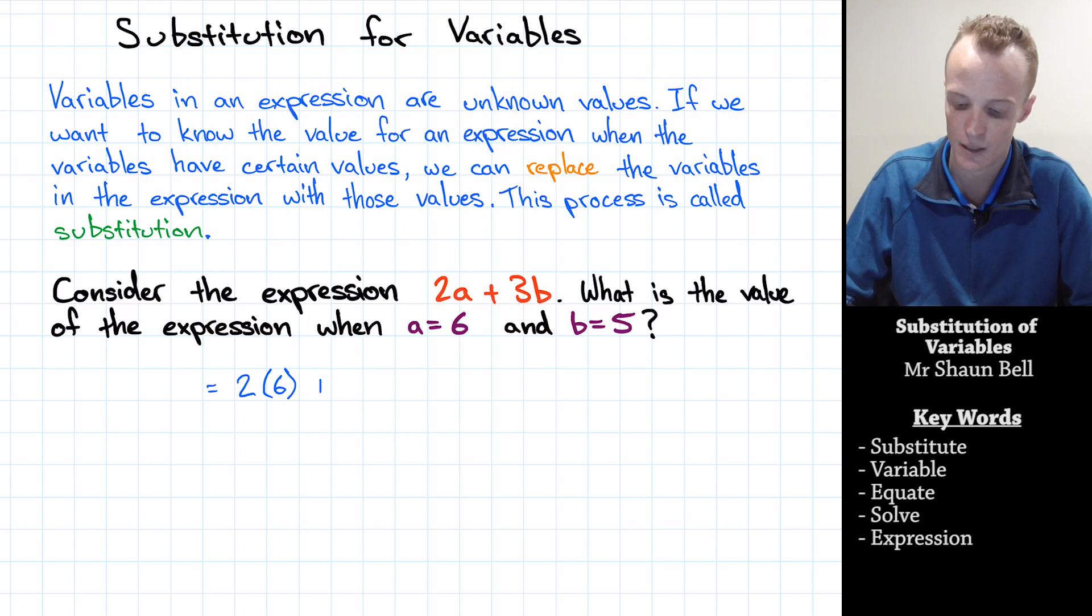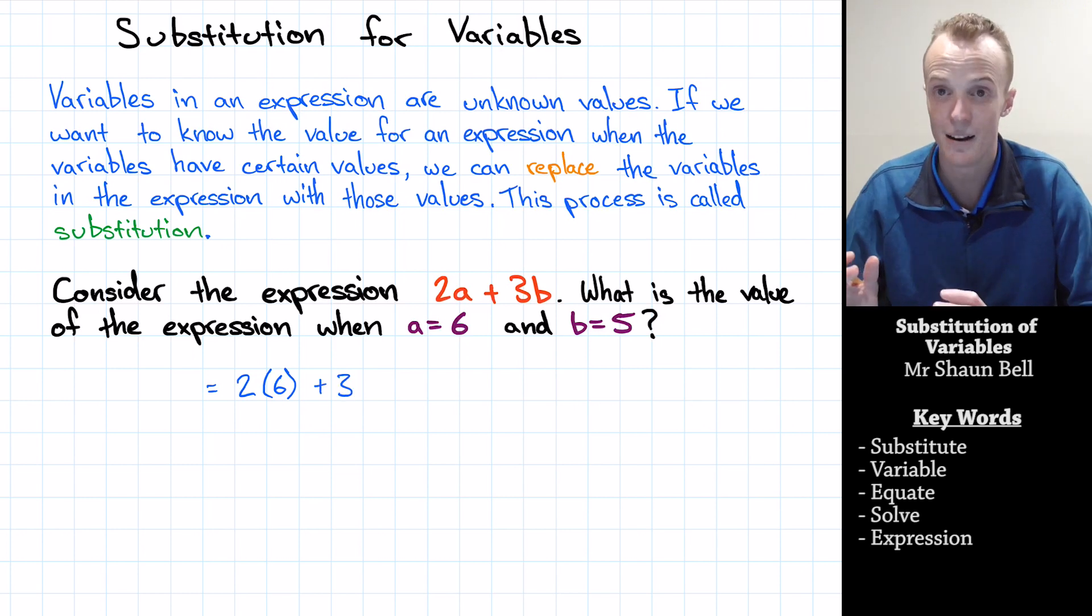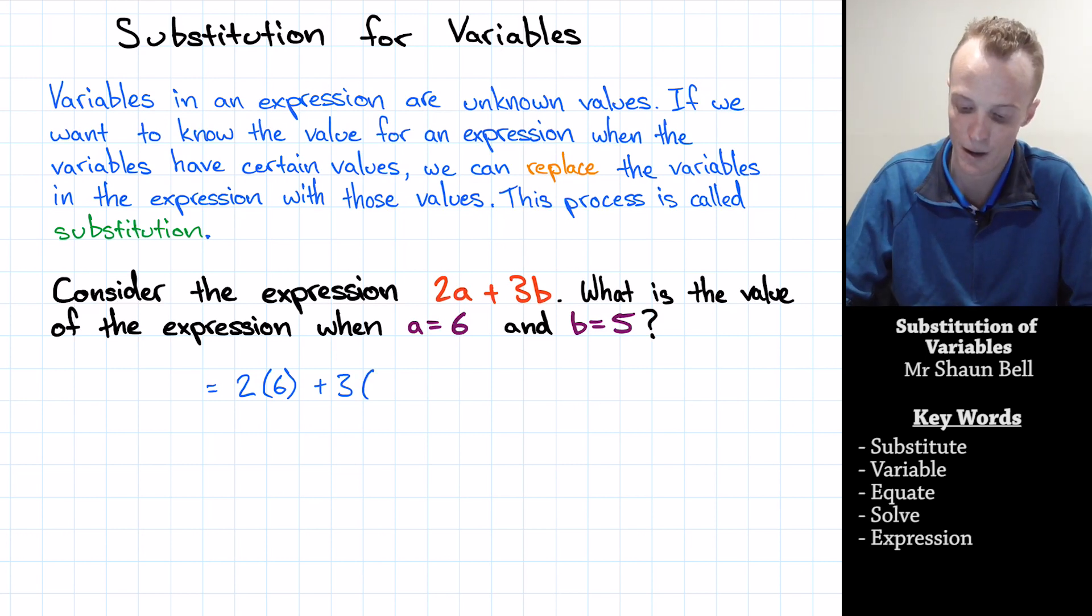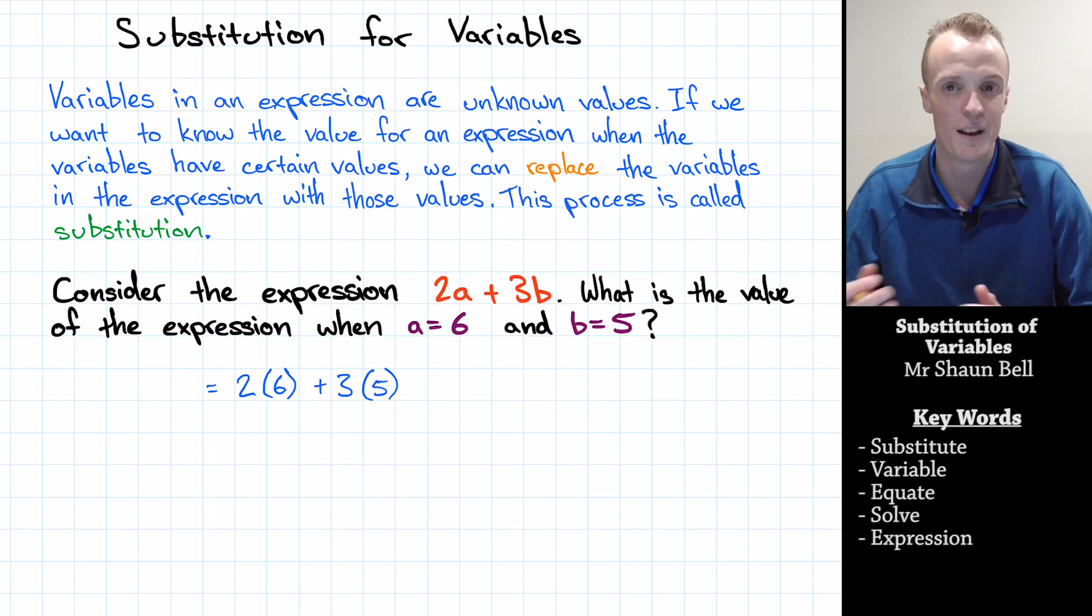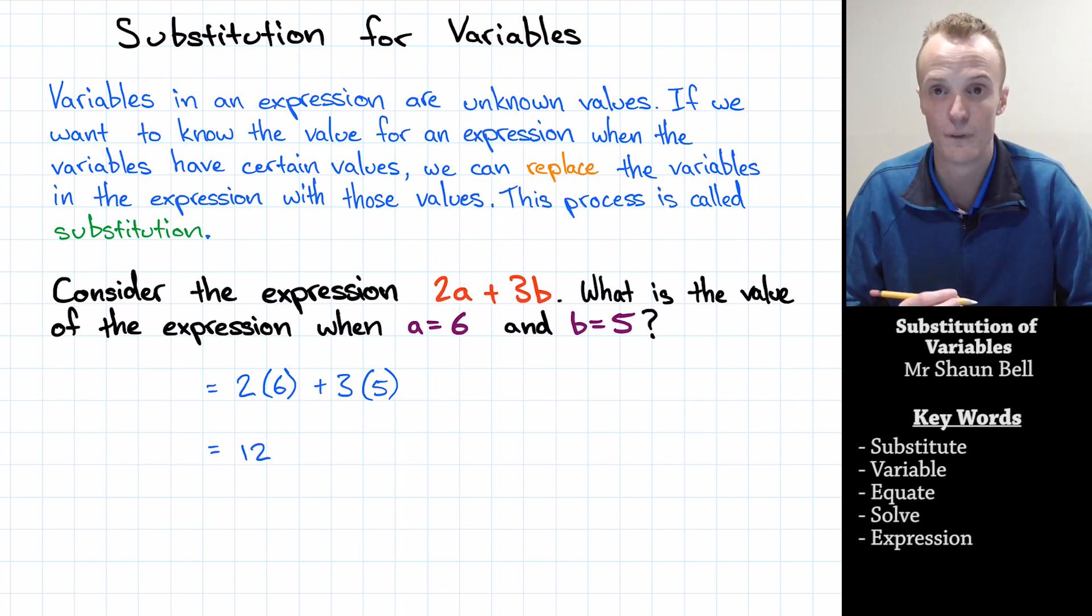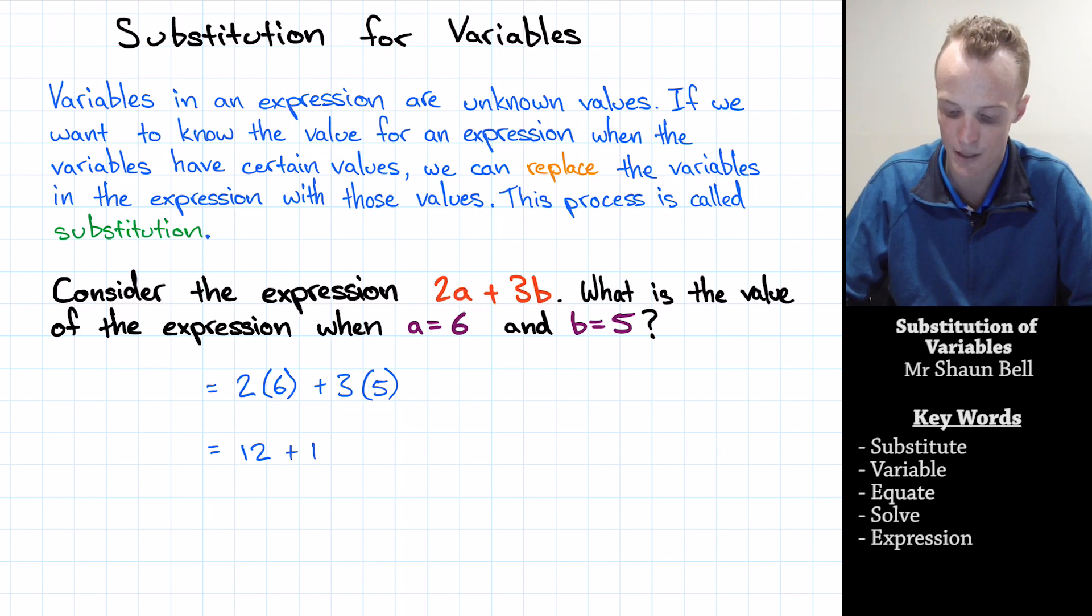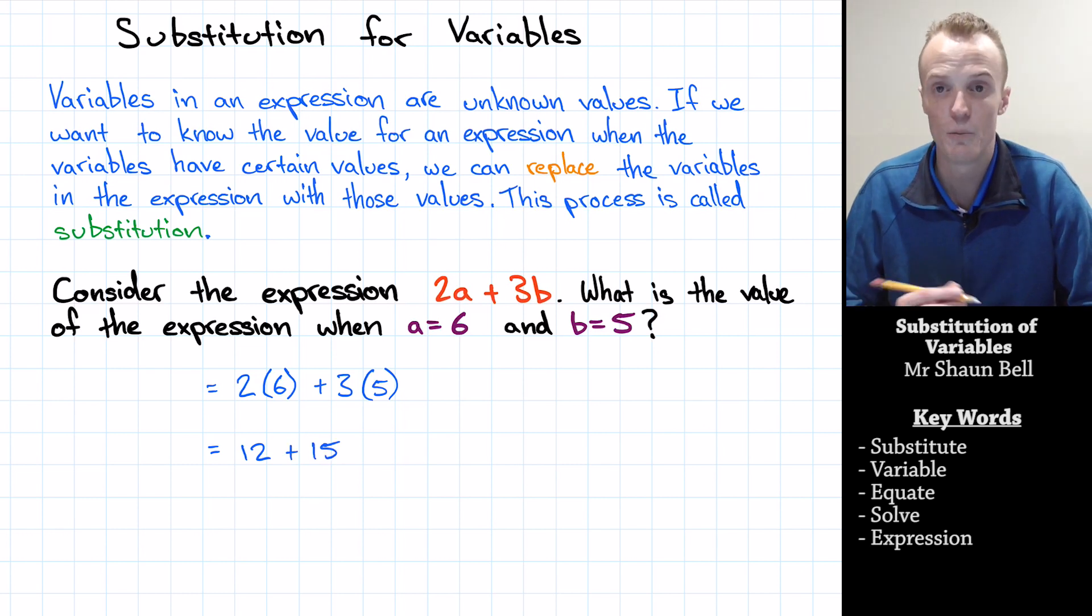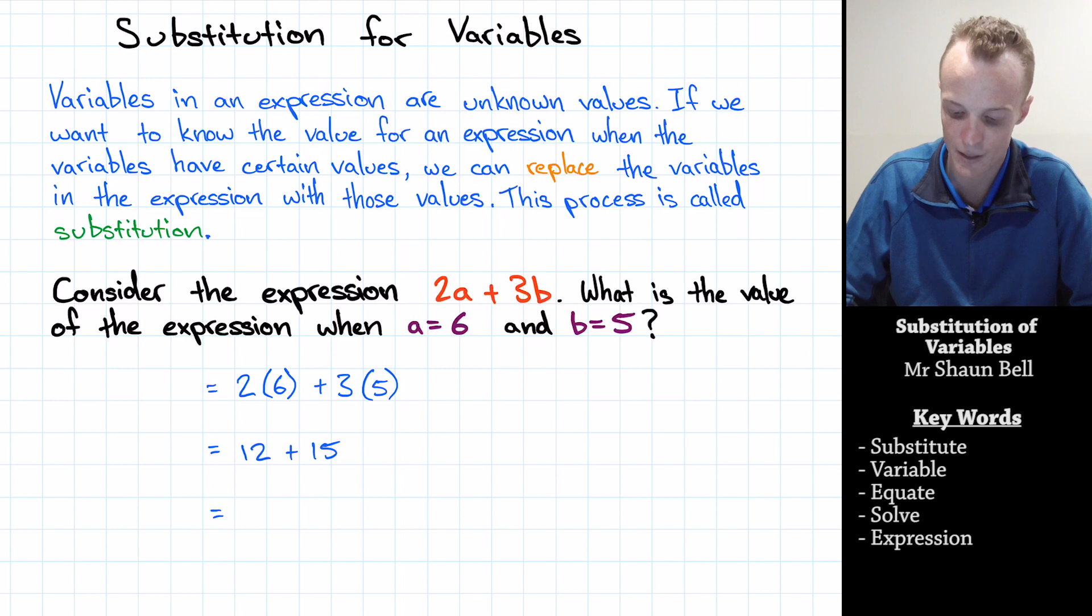Then we continue. It's plus 3 and I've come across my b. Now my b is equal to 5. So I replace my b with 5. Now you've replaced the values. The next step is just to evaluate it. So 2 times 6 is 12. 3 times 5 is 15. So it's plus 15. Then 12 plus 15 is 27.